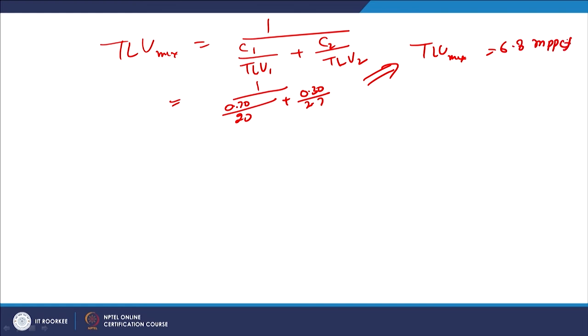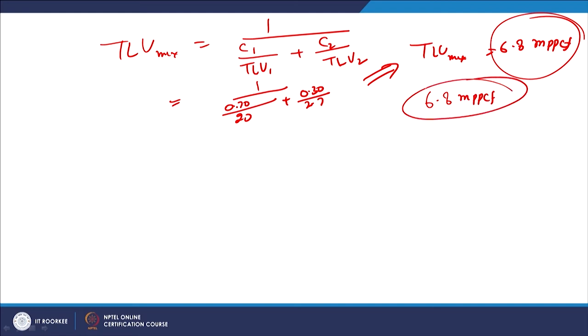Special control measures are required when the actual particle count in the specified size range exceeds 6.8 MPPCF. If the measured count exceeds this limit, appropriate measures must be taken to address this situation.